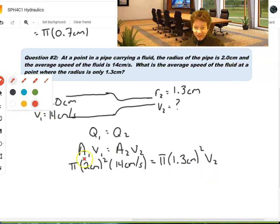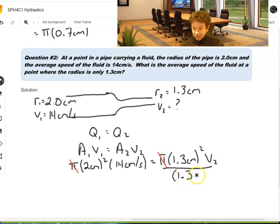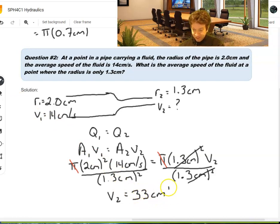On each side of the equation, we have pi, so that's actually just going to cancel. And then, what we can do is divide both sides by 1.3 squared in order to isolate V2 on its own. So, now we've isolated V2. We can put the rest in our calculator. Here, where we have 2 squared times 14 divided by 1.3 squared. We get about 33. So, the speed has definitely increased. And we get 33 centimeters per second.